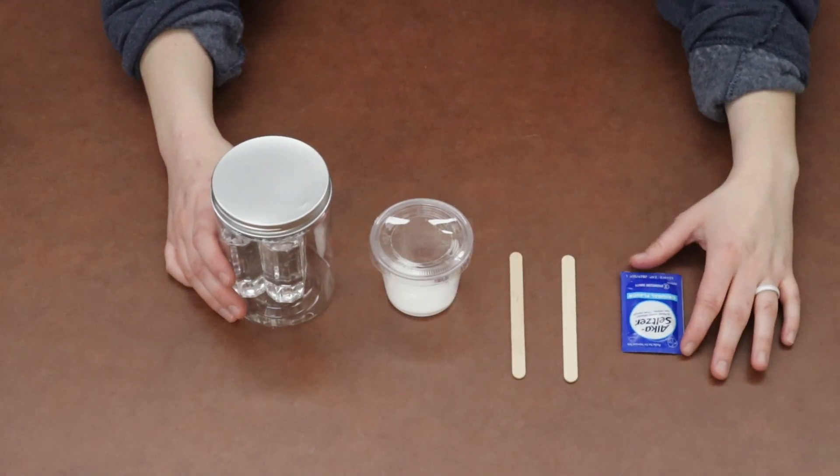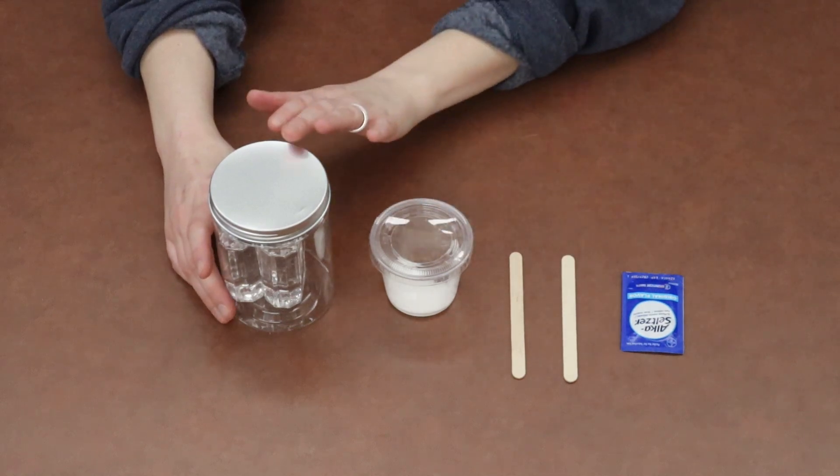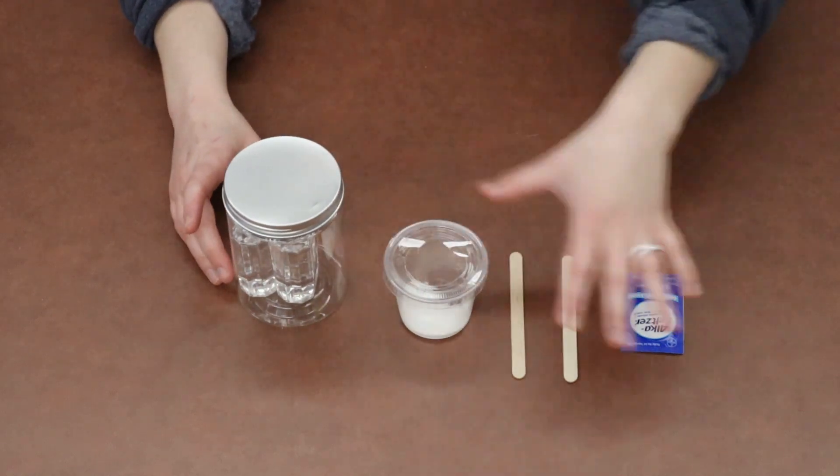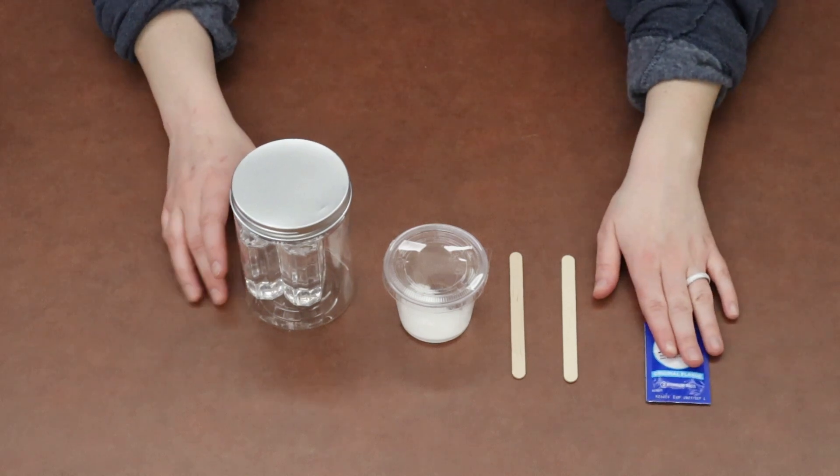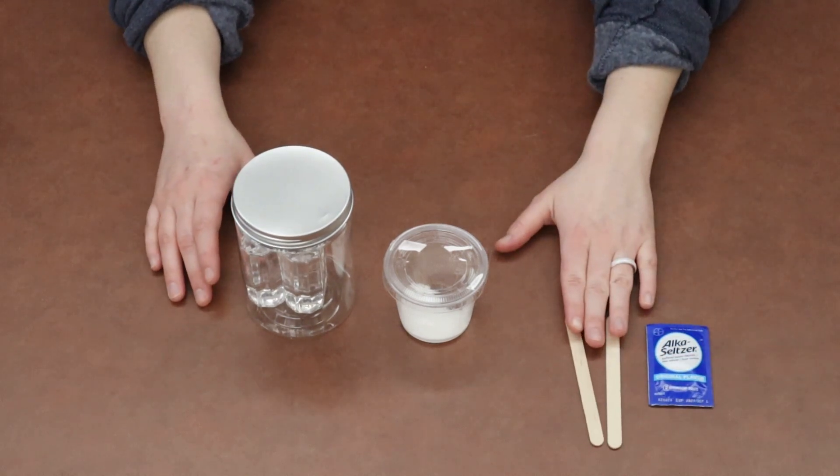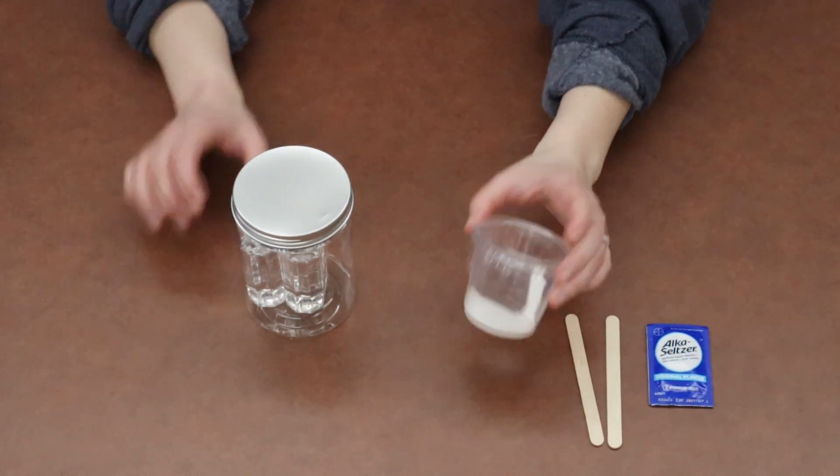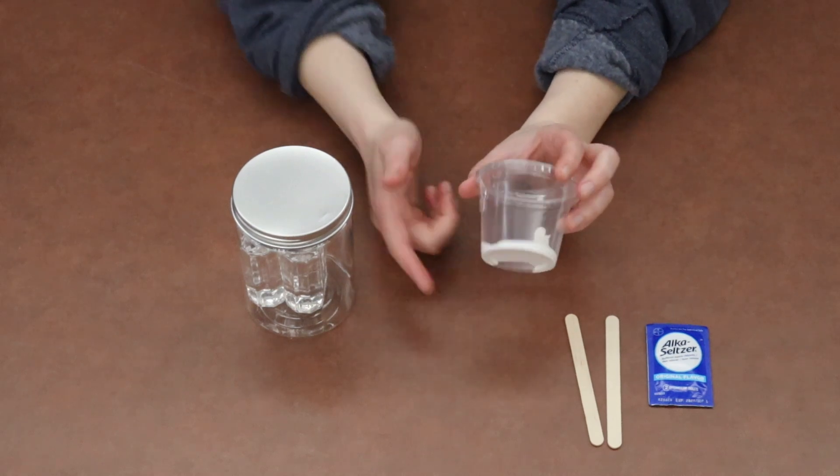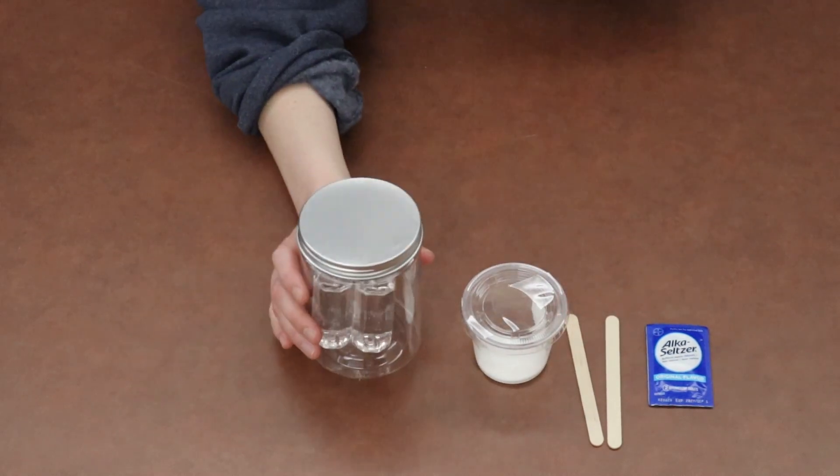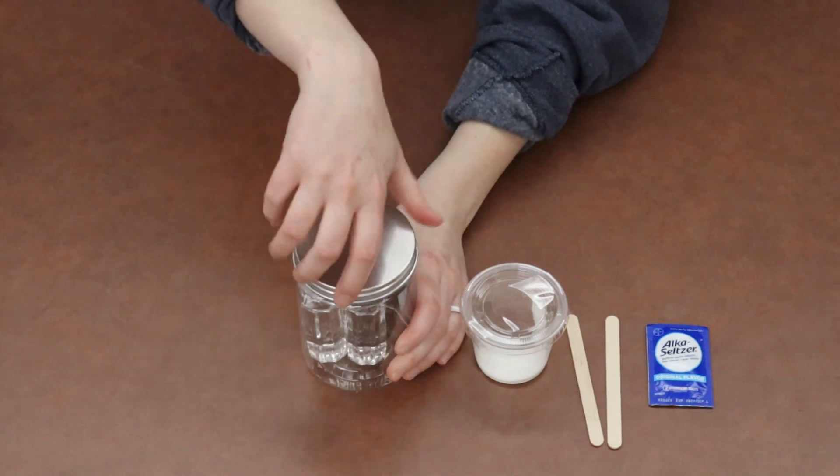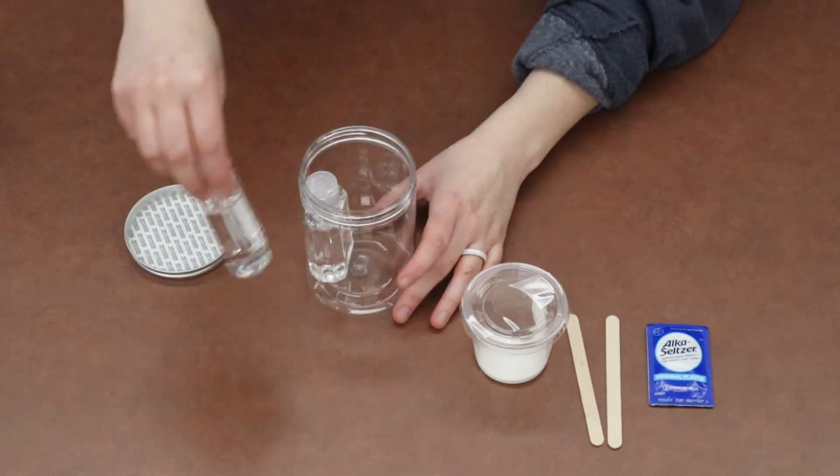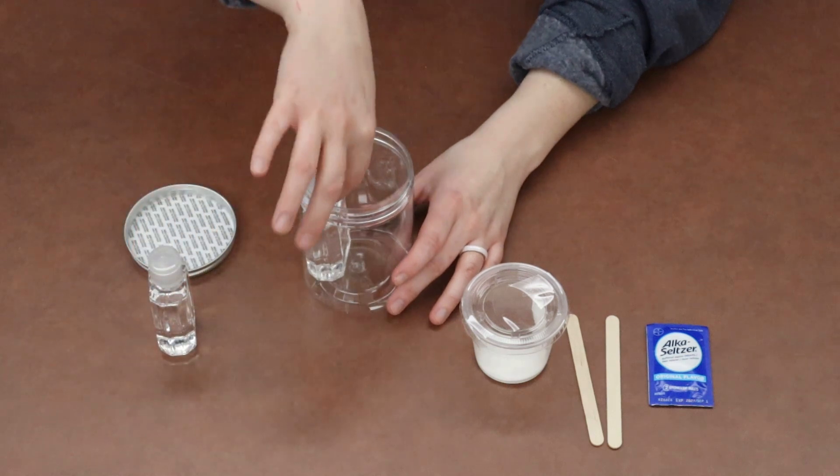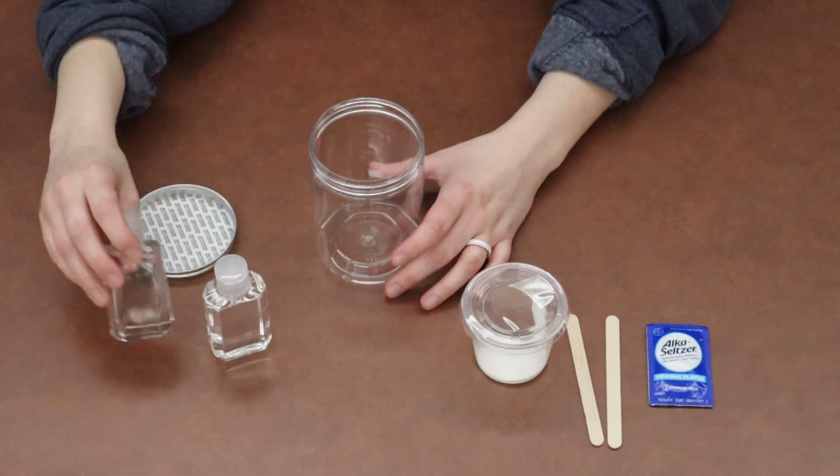First thing that we're going to do is we're going to go over what is in your Take and Make bag. So I've taken everything out of the bag and I've set it in front of me. You should have a packet of Alka-Seltzer tablets, two popsicle sticks, a little container with white Crayola washable paint at the bottom, and then a plastic jar. And inside that plastic jar, so let's go ahead and open it up, is going to be some containers of baby oil.